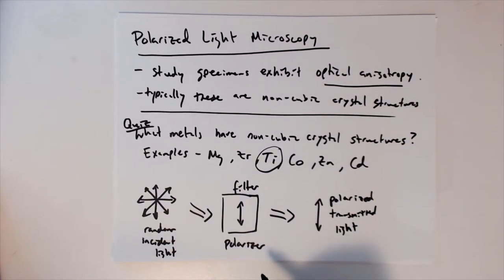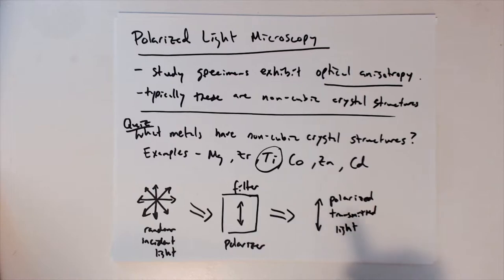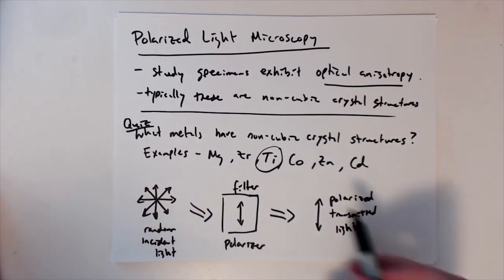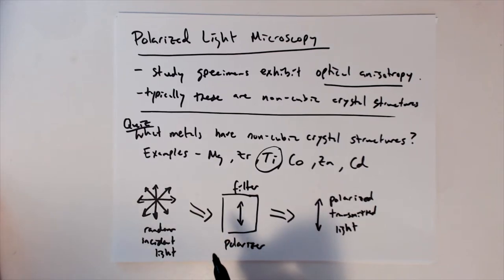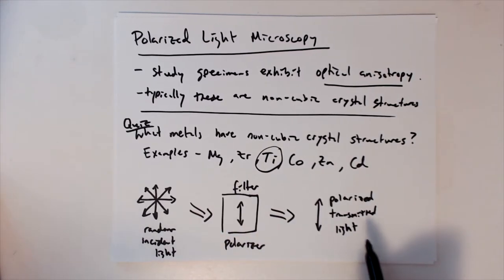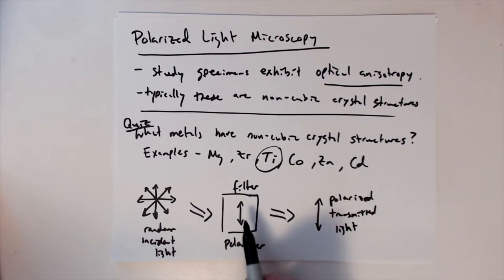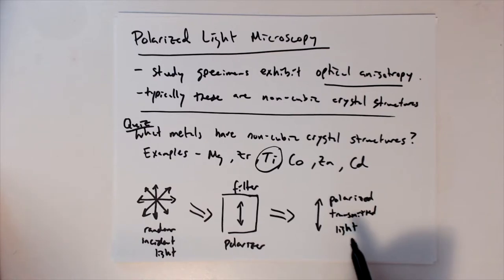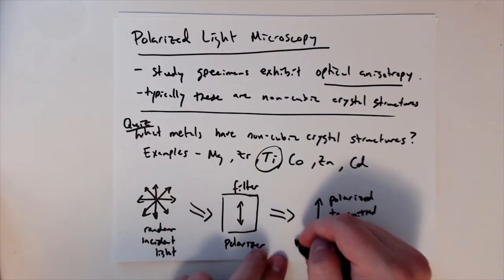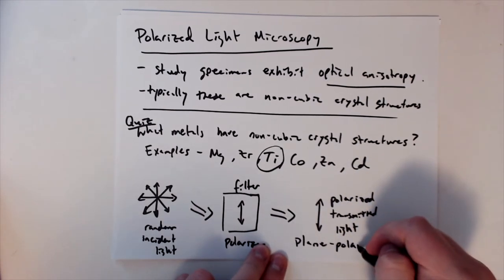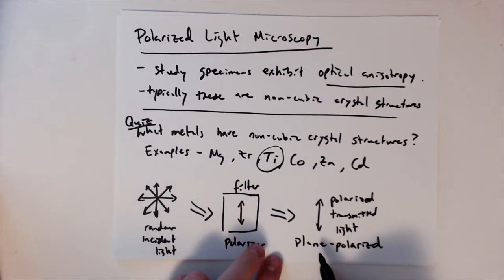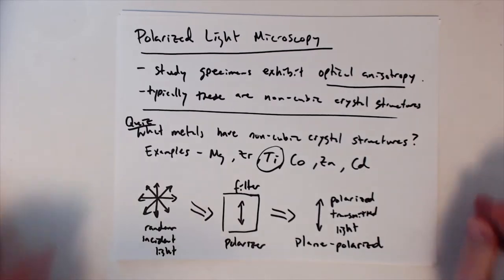This should ring a bell from the demo in the last class where we looked at Miralax through a set of polarizers. You may also recognize this from commercials about polarized sunglasses — we're only allowing light to pass through in one direction. This is what we call plane polarized light — plane not as in boring, but plane as in a single plane.